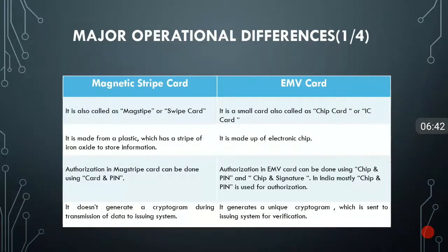Now coming to the differences between these two technologies. The magnetic stripe card can also be called a swipe card; the EMV card can be called a chip card or IC card. The magnetic stripe card is made up of plastic with a stripe of iron oxide to store information, while the EMV card is made up of an electronic chip. Authorization in a magnetic stripe card is done with card and PIN; in EMV it is done with chip and PIN or chip and signature. In India, predominantly chip and PIN is used for authorization.